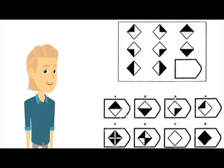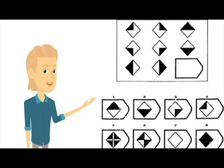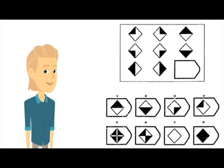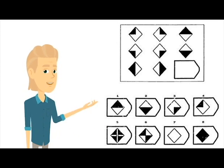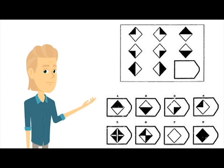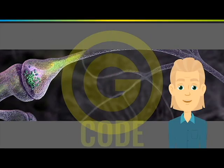Here's an example from the well-known Raven's Matrices IQ test, where you have to figure out what comes next based on some underlying rules. You can see that going from left to right in each row, the two on the left are added to make the one on the right. So the answer is number eight. That's a quick introduction to psychometric intelligence — the common factor underlying performance on tests.